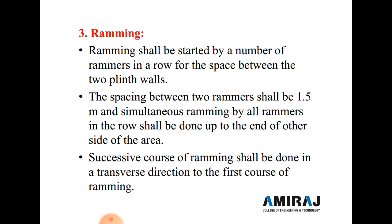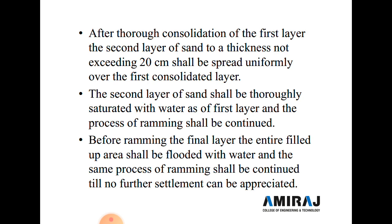After sprinkling of water, ramming is required. Ramming shall be started by a number of rammers in a row for the space between the two plinth walls. The space between the two rammers shall be 1.5 meters. Ramming by all rammers in the row shall be done up to the end of the other side of the area, and successive courses of ramming shall be done in a transverse direction to the first course.